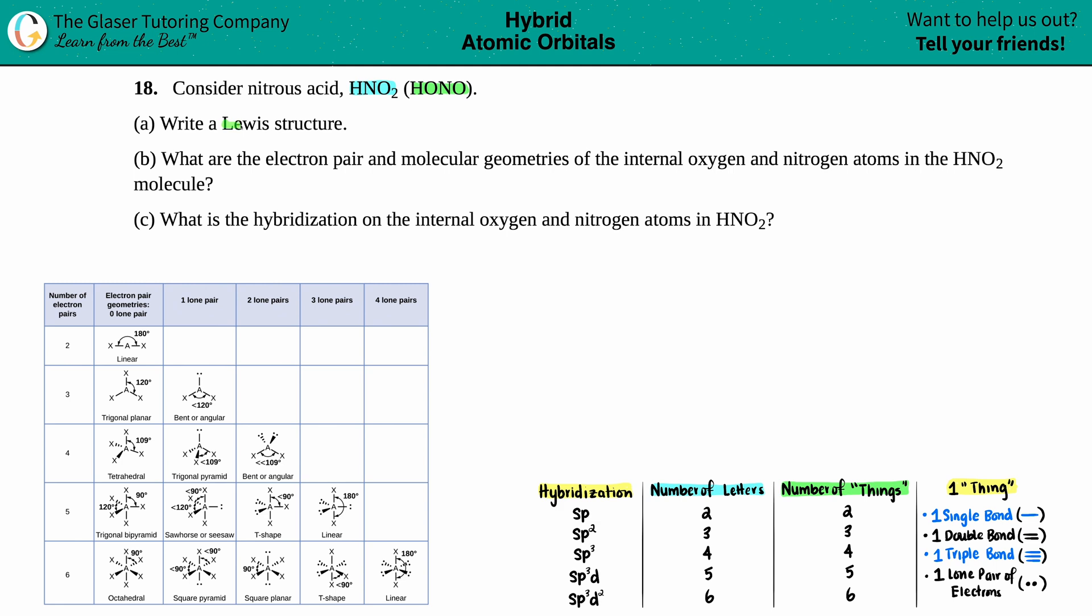We have to write the Lewis structure. So I'm not going to read B and C just yet because we have to write the Lewis structure before we do anything else. So we have to write the Lewis structure for nitrous acid, and I'm going to use this little hint. That's how the elements are arranged. So I have a nitrogen that's bound to two oxygens, and one of the oxygens has the hydrogen.